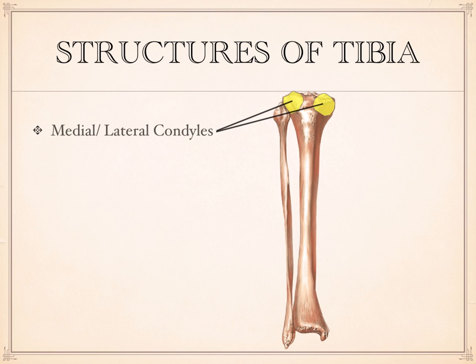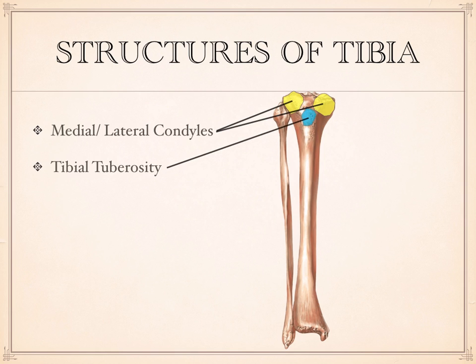The condyles of the femur look much more like what you'd think of as a condyle, but nonetheless these have been termed condyles. The two condyles of the femur sit down into the two condyles of the tibia, which are a little more concave to fit the roundness of the femoral condyles. Just below and central between the two condyles is the tibial tuberosity.